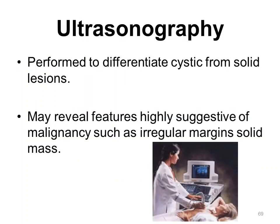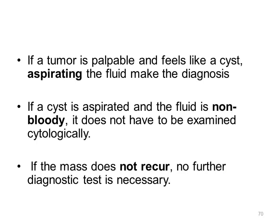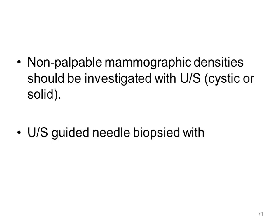Ultrasound is basically used to differentiate cystic from solid lesions and may reveal features highly suggestive of malignancy, such as irregular margins or a solid mass. If the tumor is palpable and feels like a cyst, aspirate the fluid — if it is non-bloody, no further diagnostic test is necessary. Non-palpable mammographic densities should be investigated by ultrasound first, and if proved to be solid, ultrasound-guided needle biopsies should be taken.